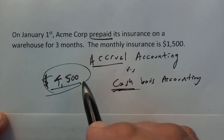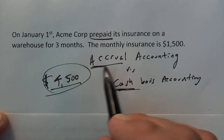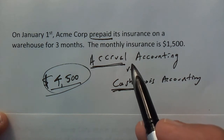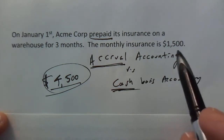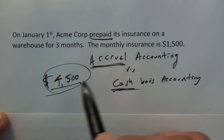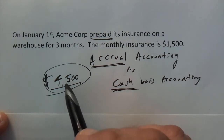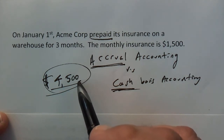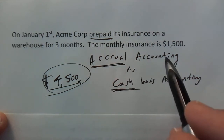But because most corporations are on an accrual basis accounting, that means that we cannot recognize all $4,500 as an expense on January 1st. We're going to have to wait on that.